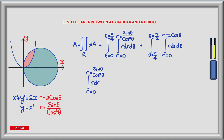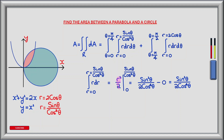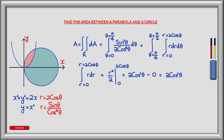We can now begin to evaluate the inner integrals. The first is the integral from r equals 0 to r equals sin theta divided by cos squared theta of r dr. The antiderivative is r squared divided by 2. Plugging in the limits gives sin squared theta divided by 2 cos to the power of 4 theta minus 0, which equals sin squared theta divided by 2 cos to the power of 4 theta. For the second inner integral we integrate between r equals 0 and r equals 2 cos theta of r dr. The antiderivative is r squared divided by 2, and plugging in the limits gives 2 cos squared theta minus 0, which equals 2 cos squared theta.